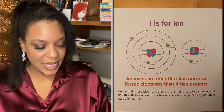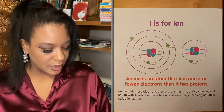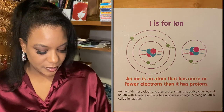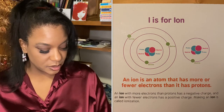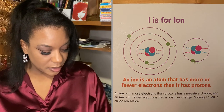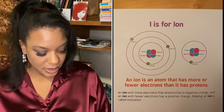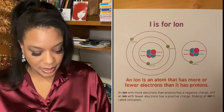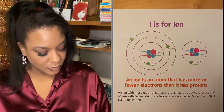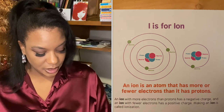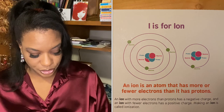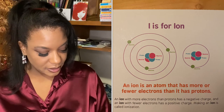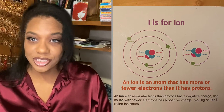I is for ion. An ion is an atom that has more or fewer electrons than it has protons. An ion with more electrons than protons has a negative charge, and an ion with fewer electrons has a positive charge. Making an ion is called ionization.